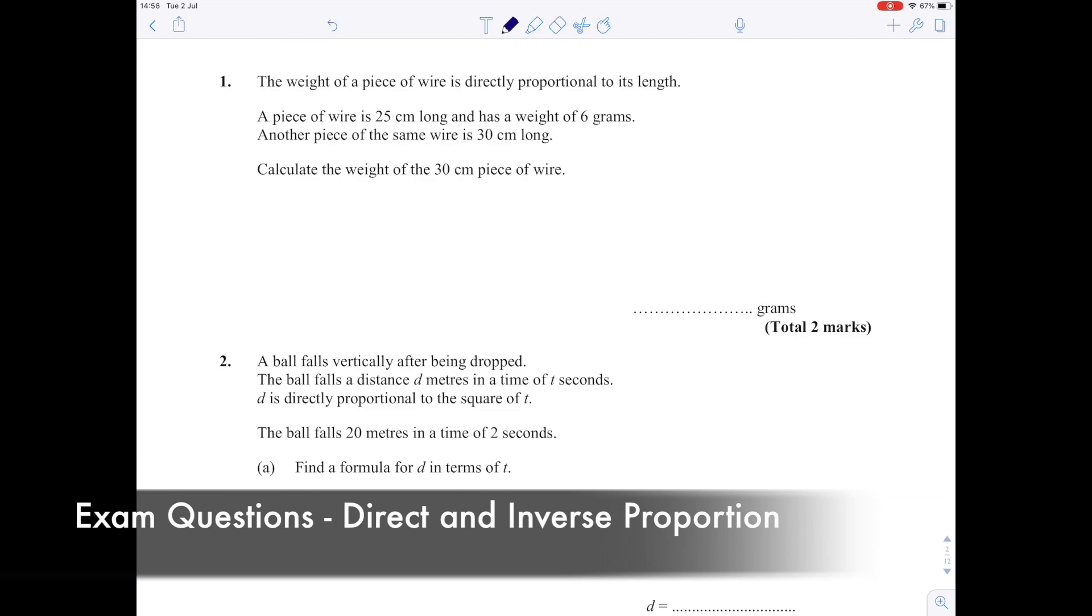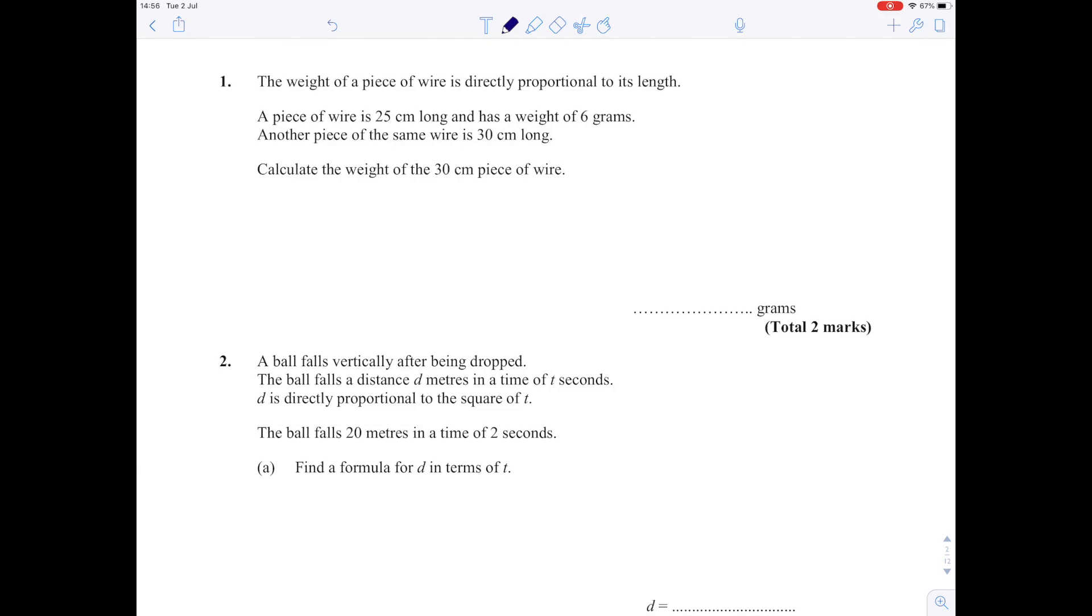We're going to look at a variety of questions to do with proportion. The first question is straightforward: the weight of a piece of wire is directly proportional to its length, which we write as w is directly proportional to l. Proportional signs aren't very easy to use, so we write that as an equation w is k times l.